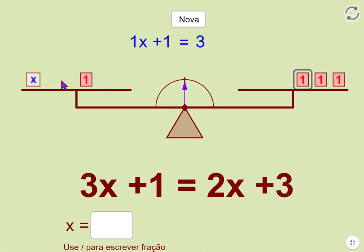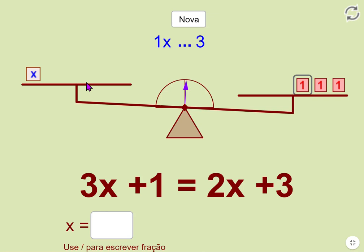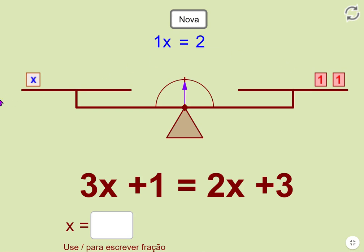So we're going to remove this one. We're unbalanced, we're too light. But to balance it out, we're going to remove this one. Now we have the answer: X equals 2.